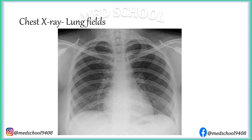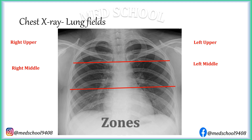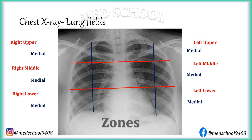On chest X-rays, lungs are divided into zones and not lobes. Both lungs are divided into three zones each by two horizontal lines dividing the lung fields into three equal zones: upper, middle, and lower zones. If a vertical line is drawn dividing each lung into equal halves, then each zone is further divided into a medial and lateral part.